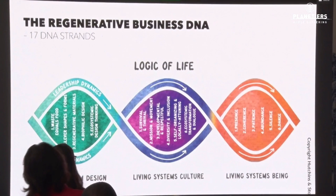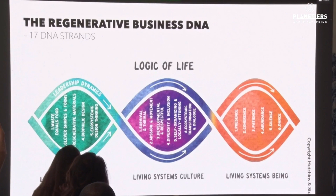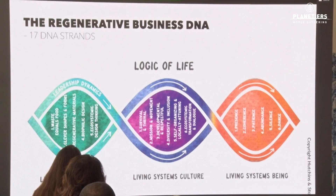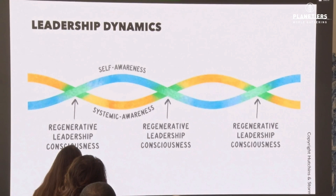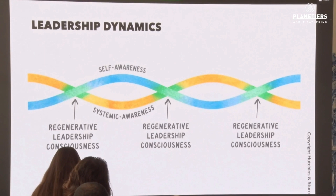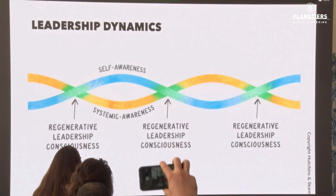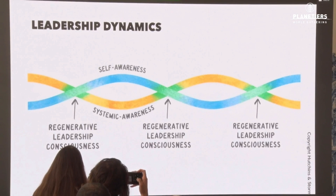There are 17 DNA strands, and we don't have time to go through all of them, but I'll give you a taste of each of the three main components. As you can probably see, there are two pulsating dynamics weaving through the framework: life dynamics and leadership dynamics. Leadership dynamics is this oscillating energy between self-awareness — a strong awareness of who we are in the world — and systemic awareness, understanding systems thinking, ecosystem and ecosystemic design thinking. When we bring these pulsating dynamics together, that is where we are tapping into regenerative leadership consciousness.